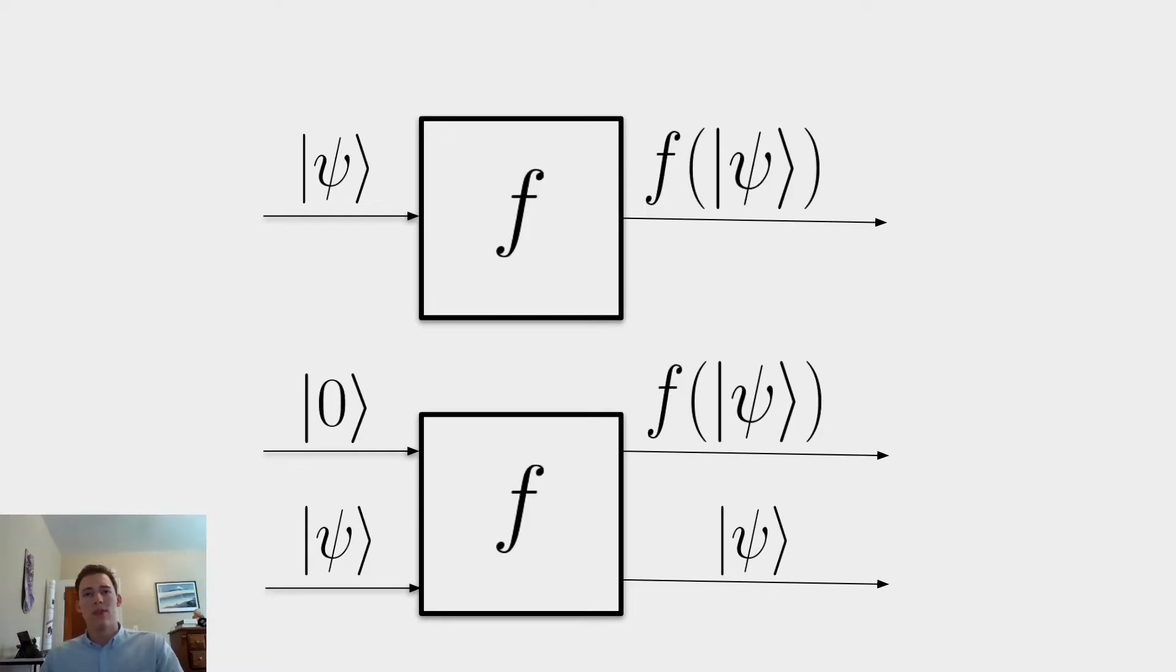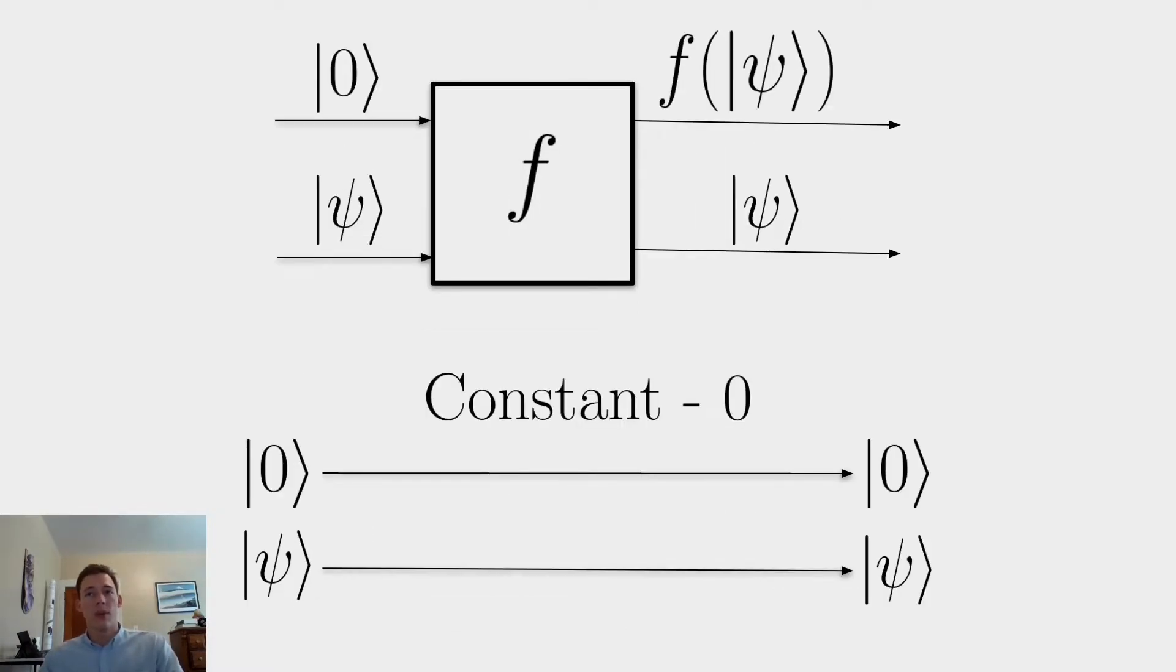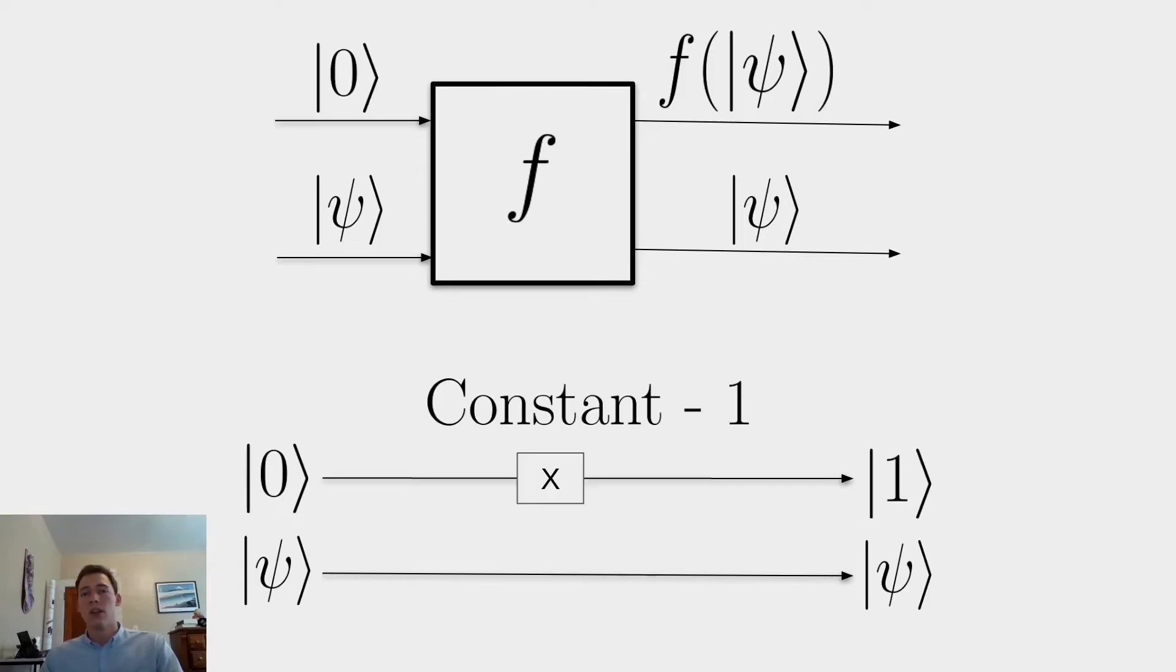So how do we implement those four operations we just talked about, with this kind of circuit model? Well, the constant zero operation is pretty straightforward. All it does is map zero to zero. So you do nothing, you just let the qubits go through it. Constant one is pretty similar, you just apply an X gate to the zero, so then it becomes a one. Now you're always going to return a one.